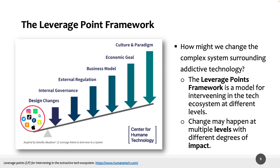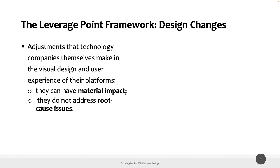Digital self-control tools are not explicitly present in this framework — they are probably on the far left, with very short-term impact and easy to implement but limited effectiveness. The framework then lists possible strategies with different levels of impact. The first leverage point is design changes: adjustments that technology companies can make in the visual design and functionality of their platforms. These can have material impact because they are embedded directly in the interface.